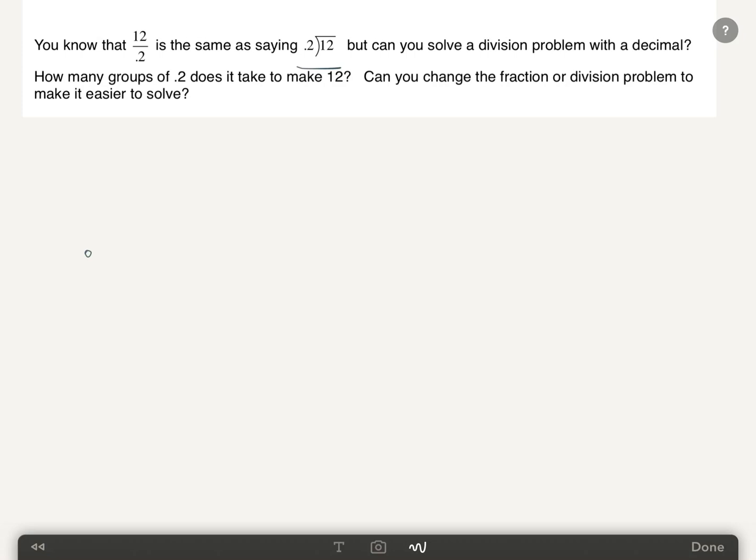It says, can you tell how many 2 tenths are in 12? Now, if this was not a decimal number and we asked simply, how many 2's are in 12, we would know that the answer would be 6, right? 6 groups of 2 equal 12, and we'd be done.